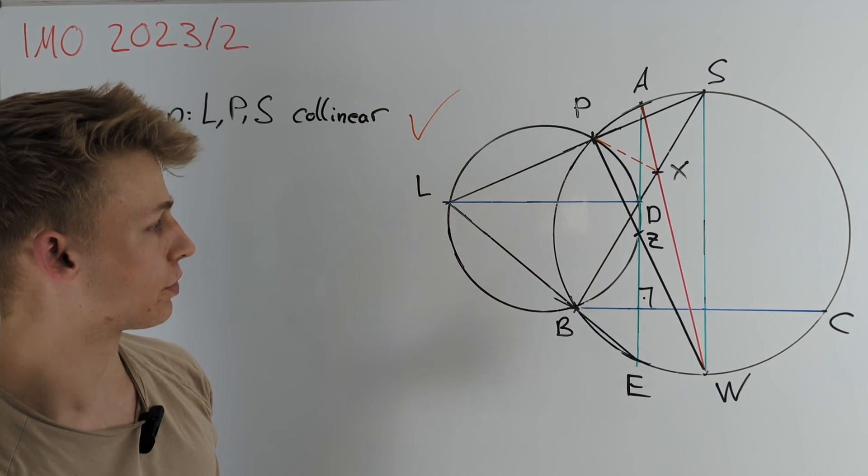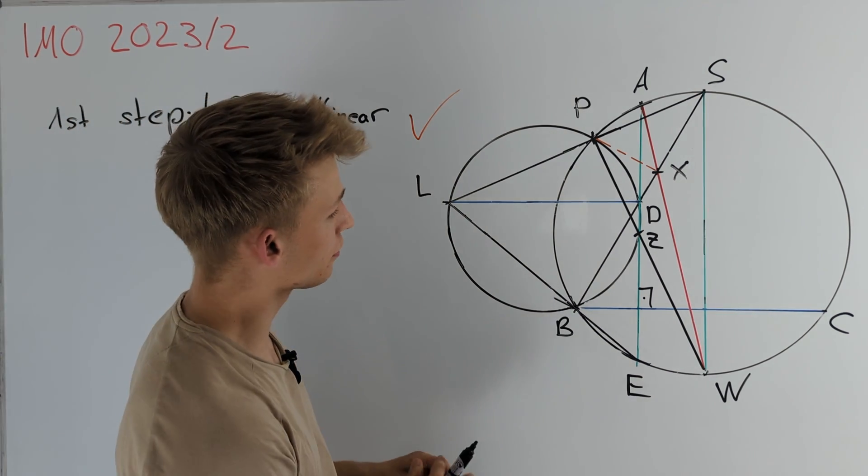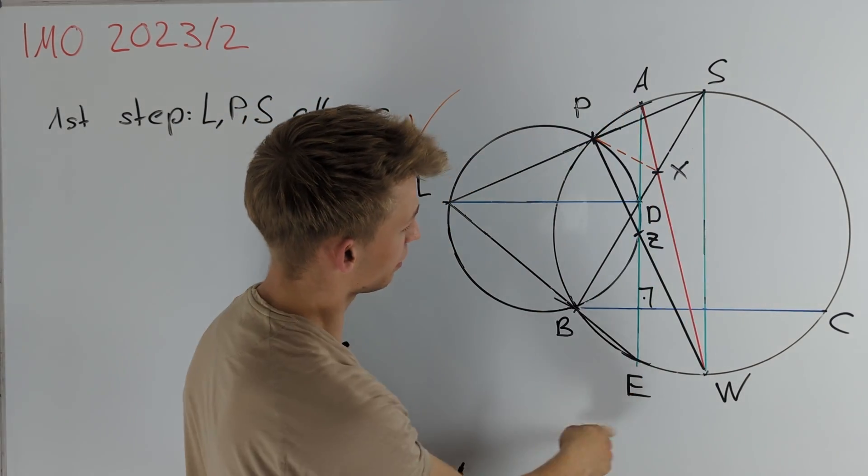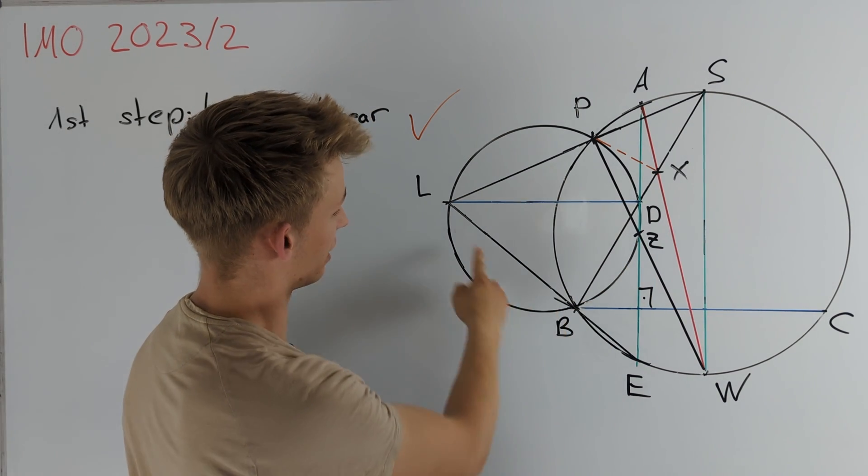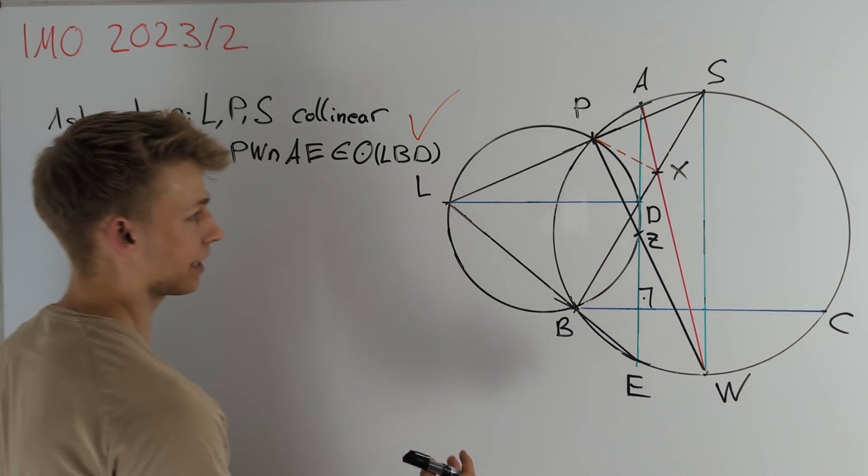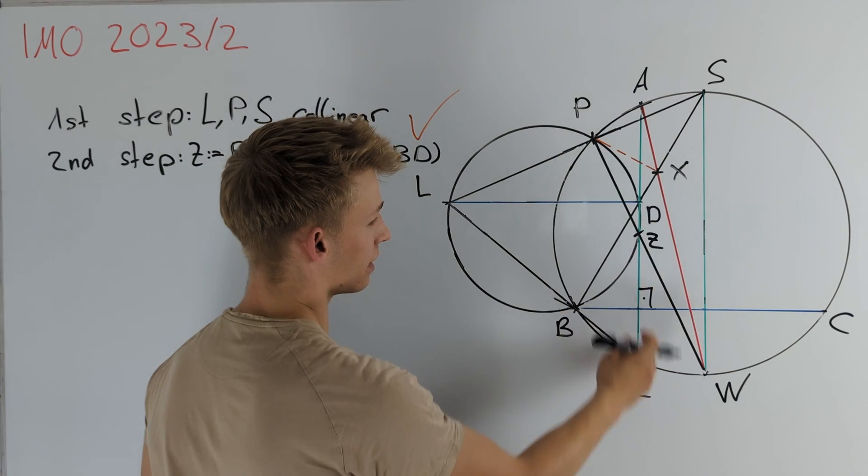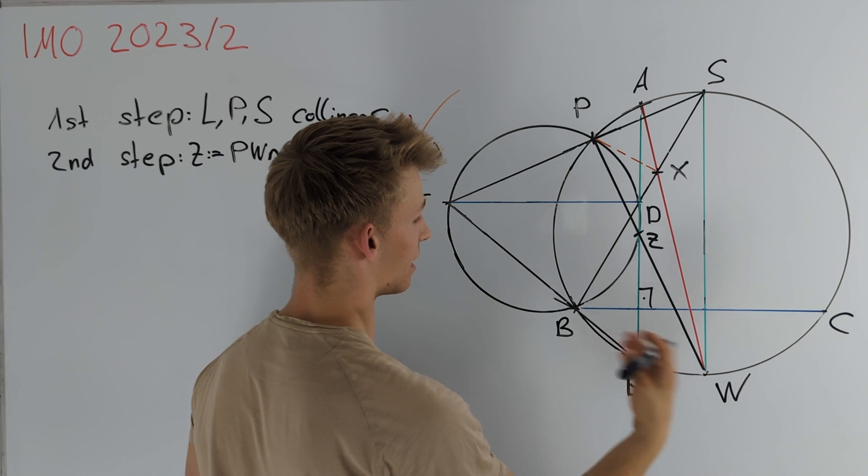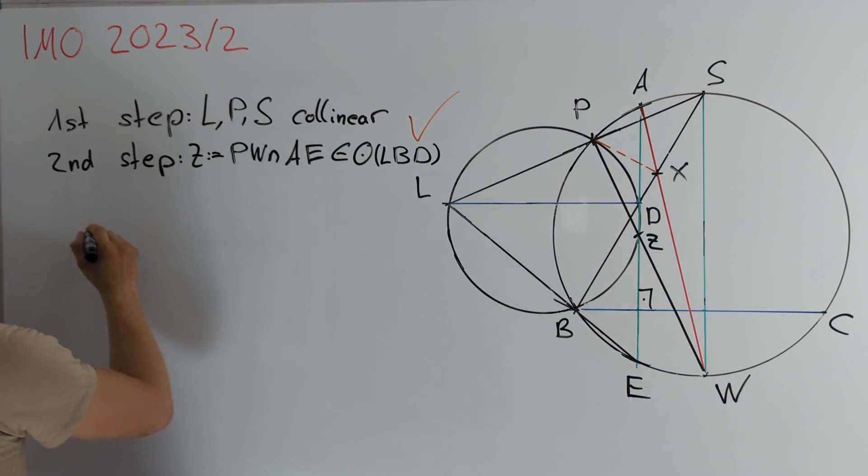We are ready to go on to the second step which is to prove that the intersection of PW and AE which I call Z lies on the circumcircle of triangle LBD. We again will do an angle chase and here we use the fact that both AE and SW are perpendicular to BC and thus they are parallel.